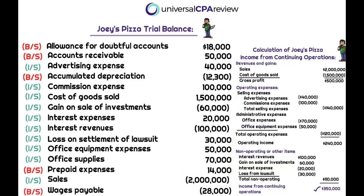Wages payable is a payable, reported on the balance sheet, not the income statement. So we've got to be prepared to take information from a trial balance and put together a multi-step income statement — that's the basics. We need to be ready for tough task-based simulation questions, know the differences between selling and administrative expenses, and know what's classified as operating versus non-operating within the income statement.